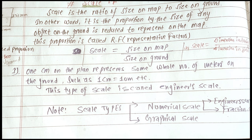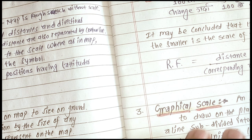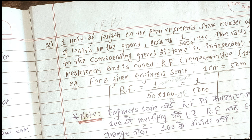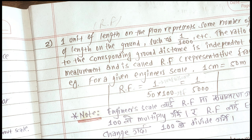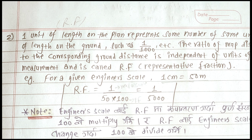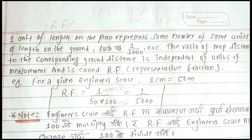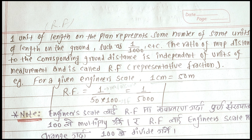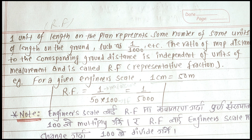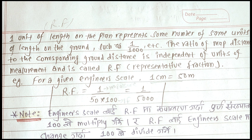The fraction scale is also called the Representative Fraction (RF) scale. One unit of length on the plan represents some number of the same units of length on the ground, such as 1/1000, which is a representative fraction scale.